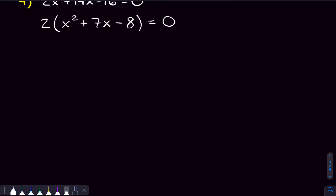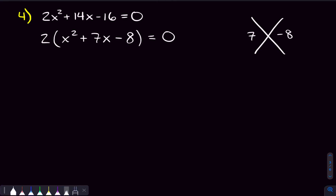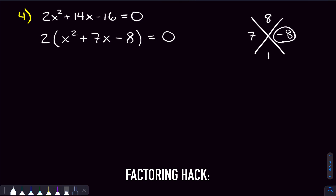We want two numbers that add to be 7 and multiply to be negative 8. Here's a useful hint: if the two key numbers are 1 apart — like 7 and 8 — your two numbers most likely will be the constant you're multiplying to and 1. Since we need to multiply to negative 8, we put the negative on the 1. So 8 plus negative 1 equals 7, and 8 times negative 1 equals negative 8. Those are our two numbers.